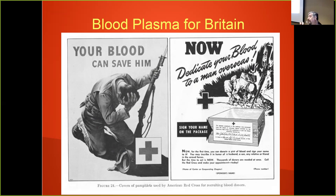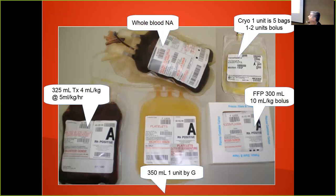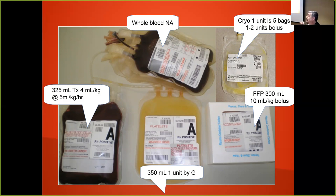Whole blood is not what we're talking about today — we're talking about fractions of blood. These are the standard fractions: a unit of packed red blood cells is about 325 ml; plasma is another 300 ml, which adds up to more than the pint in the bag because sodium citrate — the anticoagulant — makes the volume larger. Then there are platelets and cryoprecipitate.